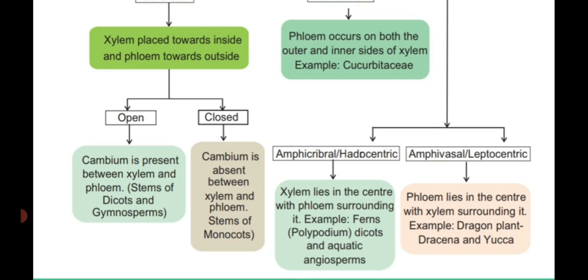In the amphivasal vascular bundle, phloem lies at the center surrounded by xylem. Example: dragon plants such as Dracaena and Yucca. These are the two types of concentric vascular bundle: amphicribral and amphivasal.